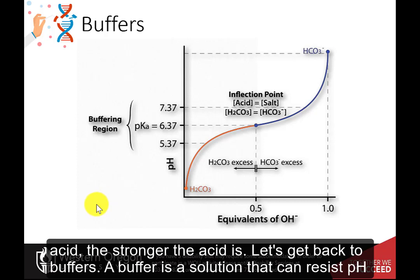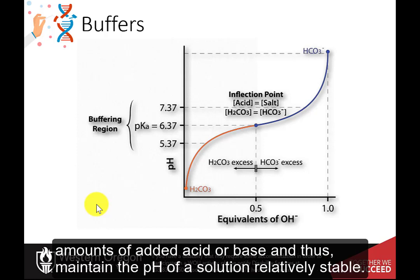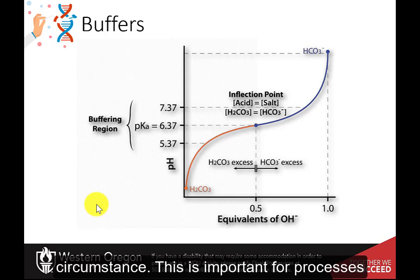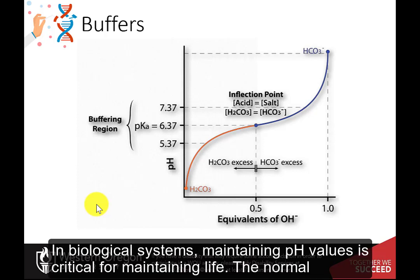Let's get back to buffers. A buffer is a solution that can resist pH change upon the addition of an acidic or basic component. It is able to neutralize small amounts of added acid or base and thus maintain the pH of a solution relatively stable. It is essentially a substance that can act as both an acid or a base depending on the circumstance. This is important for processes and reactions which require specific and stable pH ranges. In biological systems, maintaining pH values is critical for maintaining life.